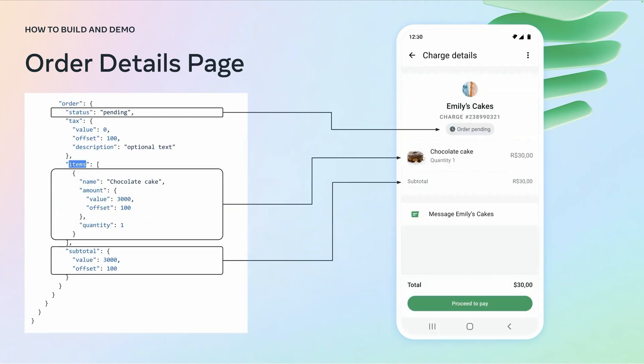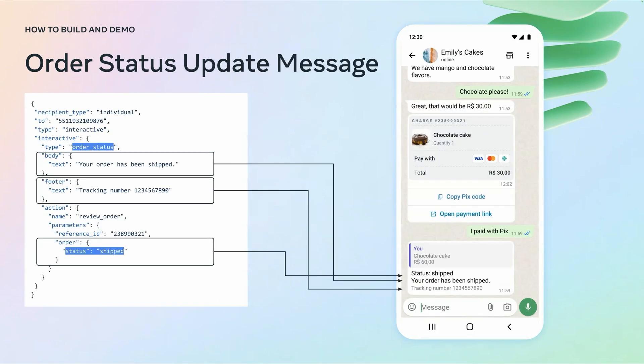Here's the rest of the order details payload used to render the order details page. It includes an array of items, each with name, quantity, and amount, a subtotal that matches the sum of item amounts, and the current status of the order. You initially set the status to pending and later update it, for example, to shipped or complete, using a follow-up API call, which we'll look at next.